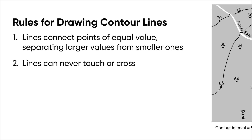Another rule is that the lines can never touch each other or cross one another. And if you think about it, that's actually very logical, because imagine a point where a 55-foot contour line actually crossed over a 60-foot contour line — that would suggest the elevation at that point is both 55 and 60 feet, which of course doesn't make sense. The lines might get very close together or very far apart, but they should never touch.